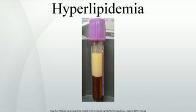Hyperlipidemia, also called hyperlipoproteinemia, involves abnormally elevated levels of any or all lipids and lipoproteins in the blood. It is the most common form of dyslipidemia. Lipids are transported in a protein capsule; the size of that capsule, or lipoprotein, determines its density. The lipoprotein density and type of apolipoproteins it contains determines the fate of the particle and its influence on metabolism.